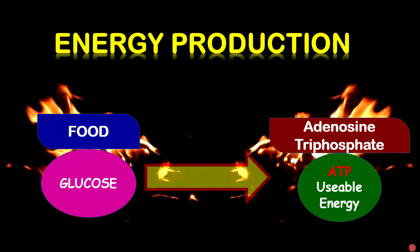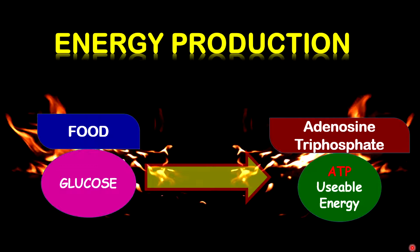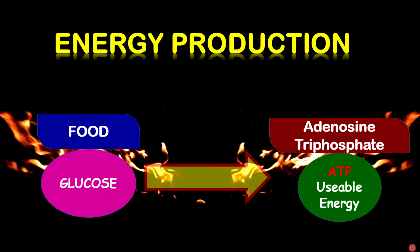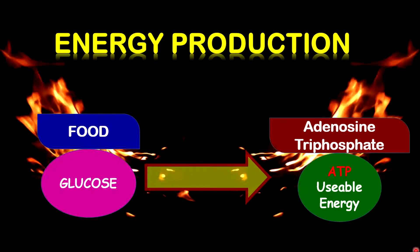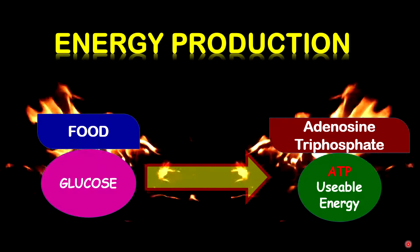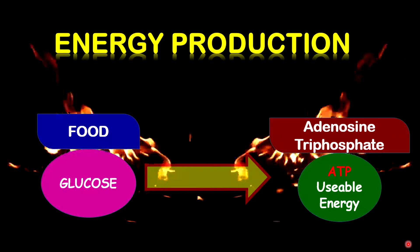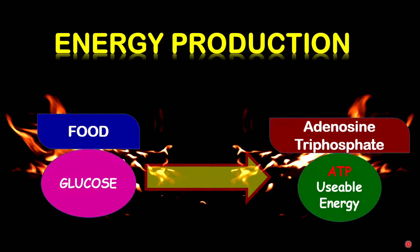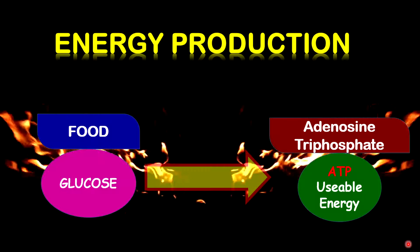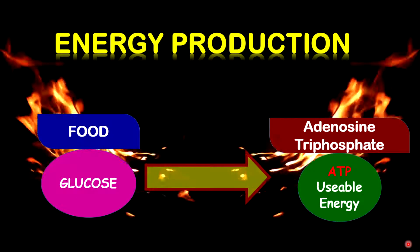Respiration is the process by which cells produce energy from food. The energy that is produced is in a chemical form known as ATP. ATP is considered to be the usable form of energy by organisms, and it is the abbreviation for the chemical adenosine triphosphate. The food that is normally used for respiration is glucose, which is a form of carbohydrate. Carbohydrates are the primary sources for energy production in organisms.